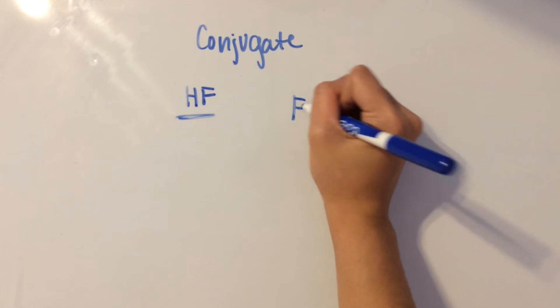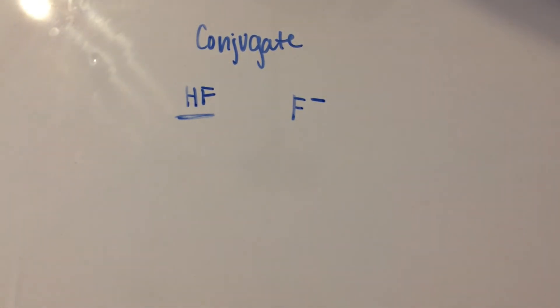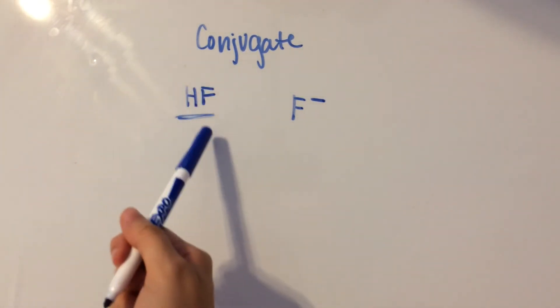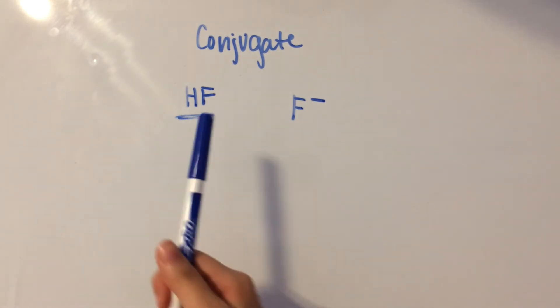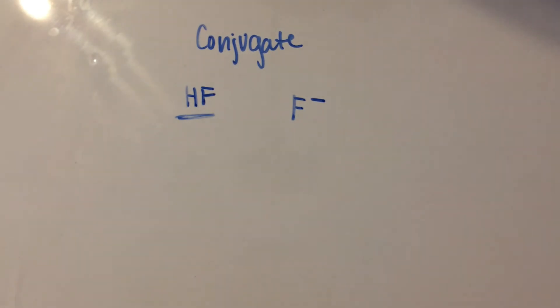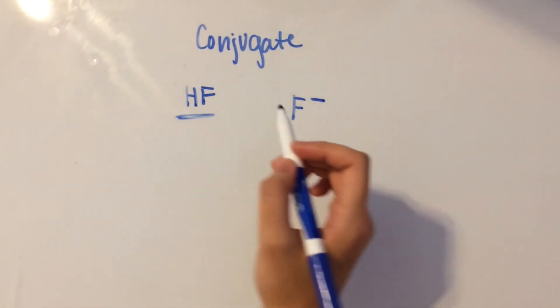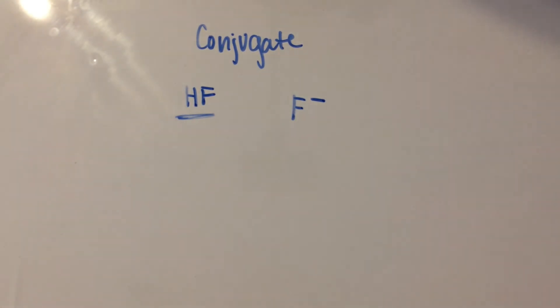Because the charge is neutral in the HF, but when you take out an H plus, it's going to become negative. And we're going to be left with only the F.